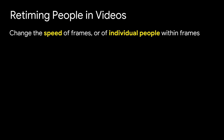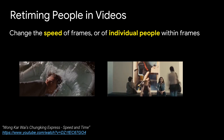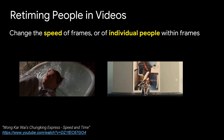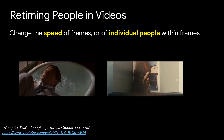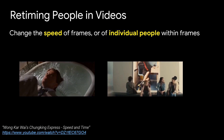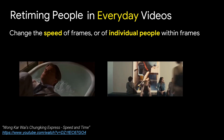Today I'm going to talk about retiming people in videos — changing the speed of frames or the speed of individual people within frames in order to enhance the way we perceive video content. We see such retiming effects in films all the time: slow mo, fast speed, or a combination of them are used to focus the viewer on specific motions or events. Of course, to produce such effects we need special cameras and lots of staging, so today I'll talk about how retiming effects can be achieved in everyday videos in post-processing.